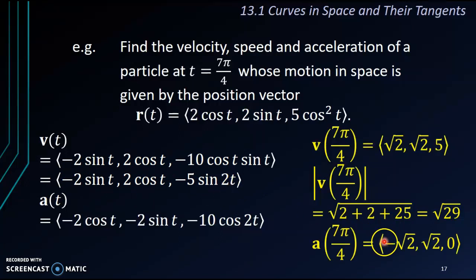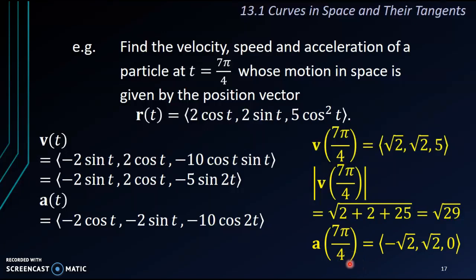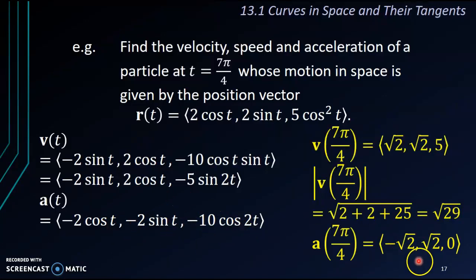Lastly, we find the acceleration at t = 7π/4 by substituting into each component, and we get negative √2, √2, and 0.